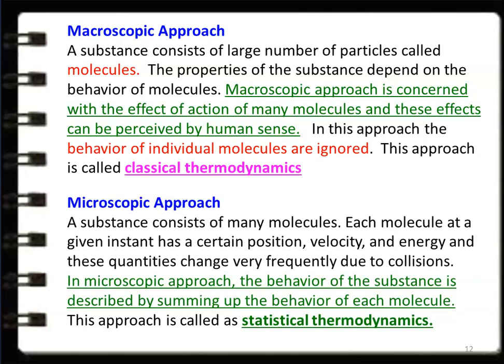In the microscopic approach, the substance consists of many molecules; each molecule at a given instant has certain position, velocity, and energy, and these quantities change frequently due to collision. The behavior of the substance is described by summing up the behavior of each molecule — finding the velocity of each individual molecule, adding them all up, which is very difficult and not required at undergraduate level. This kind of approach is called statistical thermodynamics. In our discussion, we will use only the macroscopic approach — classical thermodynamics.